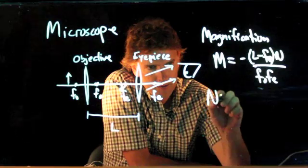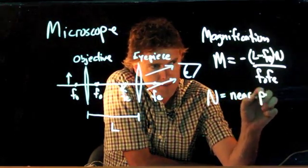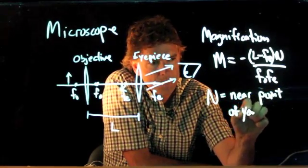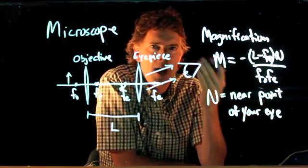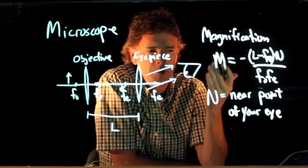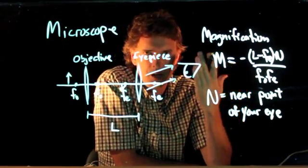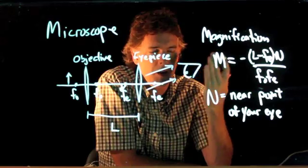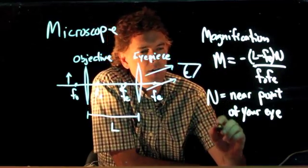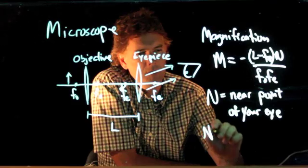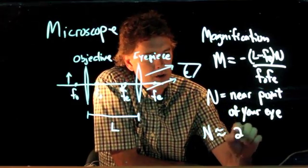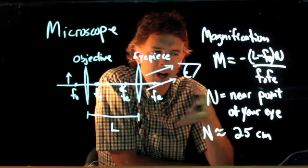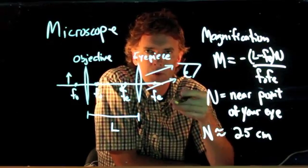N turns out to be the near point of your eye, which means how close can you focus? If I hold a piece of paper up and try to read it, how close can I come to my eye and still be able to focus on that text? Now for most humans, N is on the order of 25 centimeters. So if somebody asks what's the near point of the eye, a good answer is 25 centimeters.